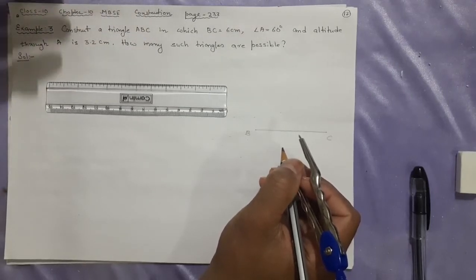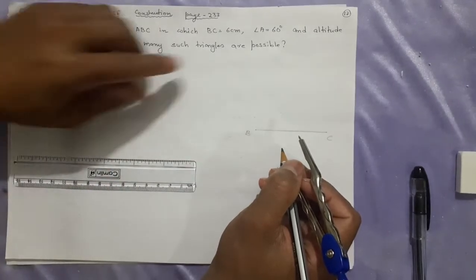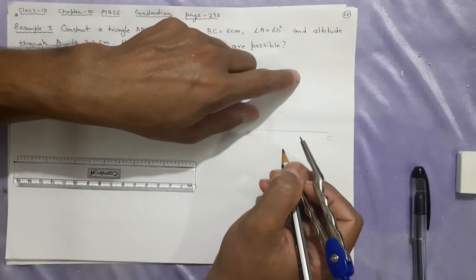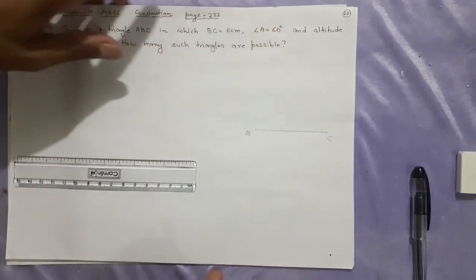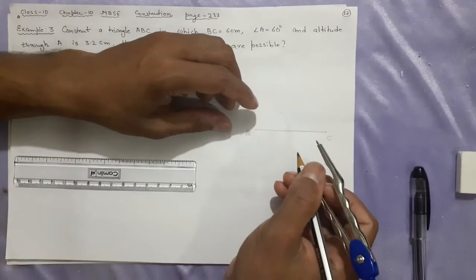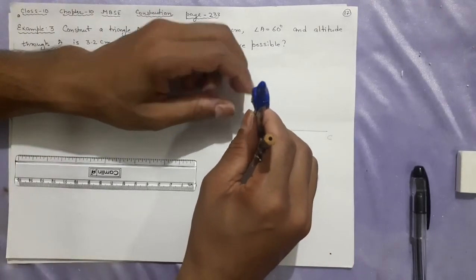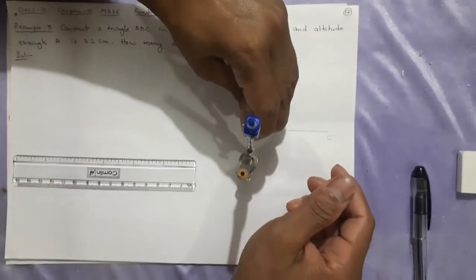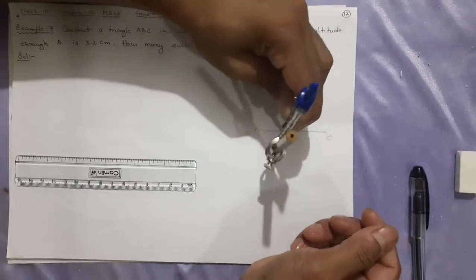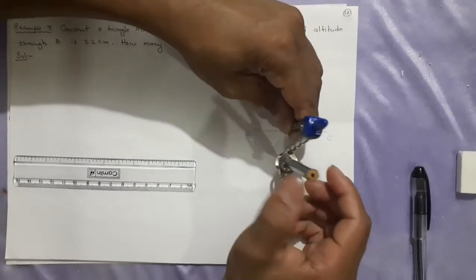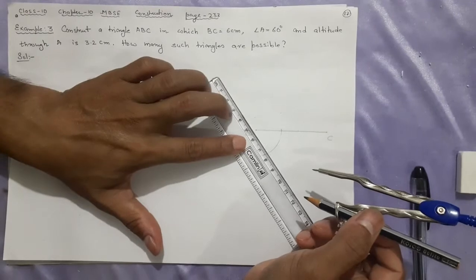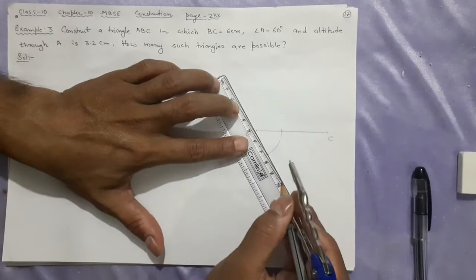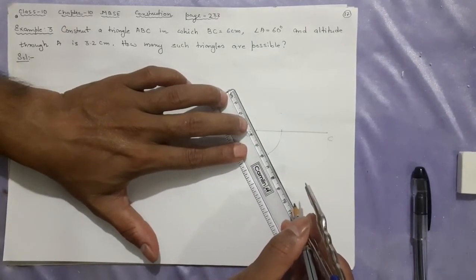Next step, I have already made the BC equal to 6 cm. Next step will be below BC you will be drawing the angle 60 degrees. That will be at A. Later on you will easily understand how it is possible by the circle relation. Let us make that 60 degrees here below, downside. This is the way I have made my 60 degrees. You're joining this point with the B, can make it a little longer.